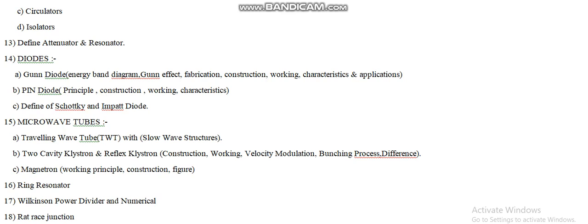According to question number seventeen, that is the Wilkinson power divider and its numericals — this is a repeated question and you must focus on the numerical part as well. Question number eighteen is the rat race junction, which is a theoretical concept and you have to describe it in the two-mark question only.